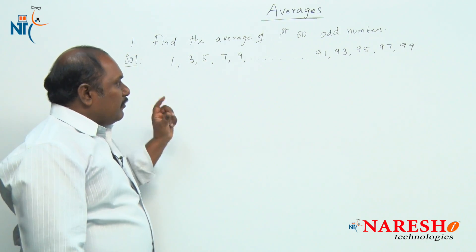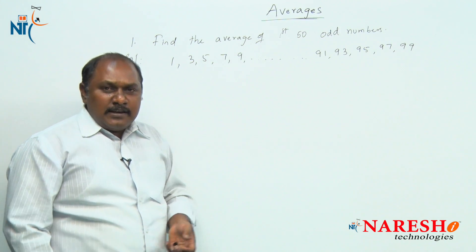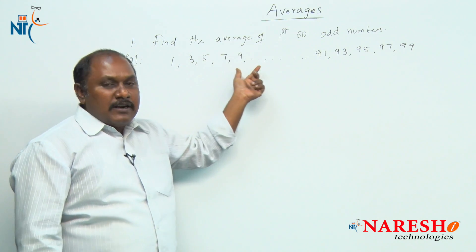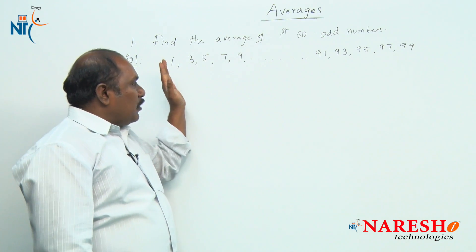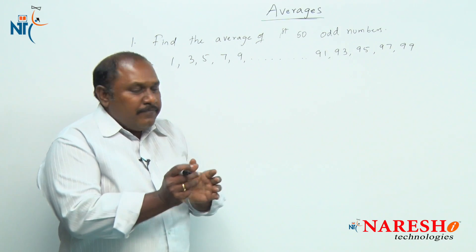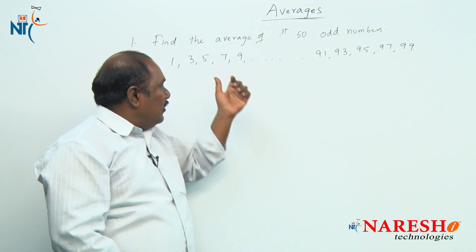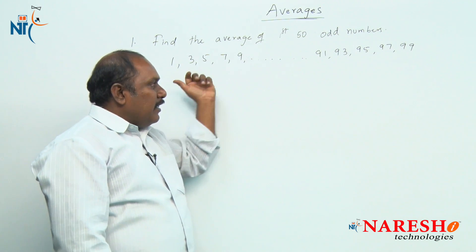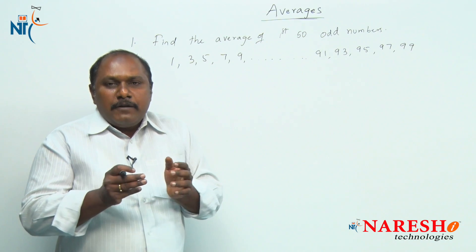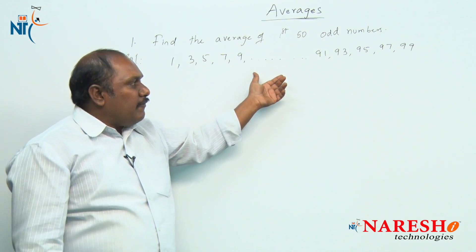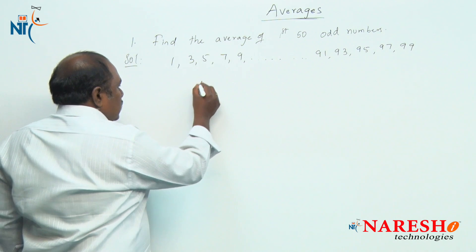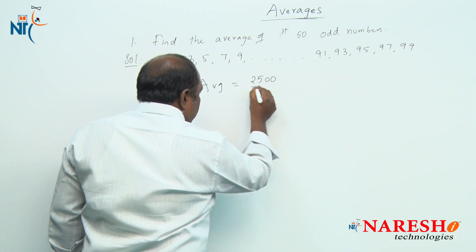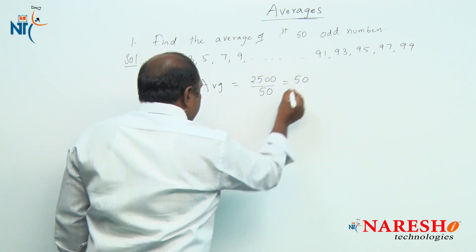Now adding these numbers without using a formula would be very tedious. Instead, add the first number 1 with the last number 99: 1 plus 99 is 100. 3 plus 97 is another 100, 5 plus 95 is 100. Like this, if we add 2 terms — one from the beginning and one from the last — we get totally 25 pairs and each pair value is 100. So the sum of observations is 2500 divided by 50 number of observations, giving the answer 50.